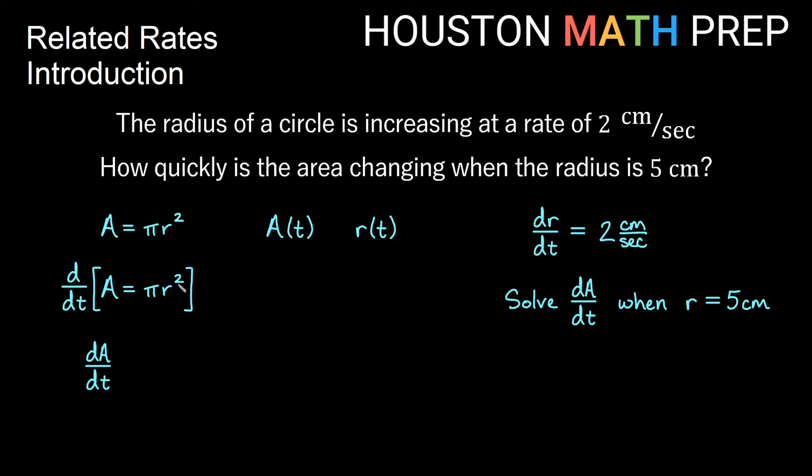now think about this is going to be a power rule, so the 2 will come out front. We'll get 2π r, but then remember that the radius is also a function of t, so the chain rule gives us times dr/dt. So this is the formula that we'll use then to solve dA/dt.